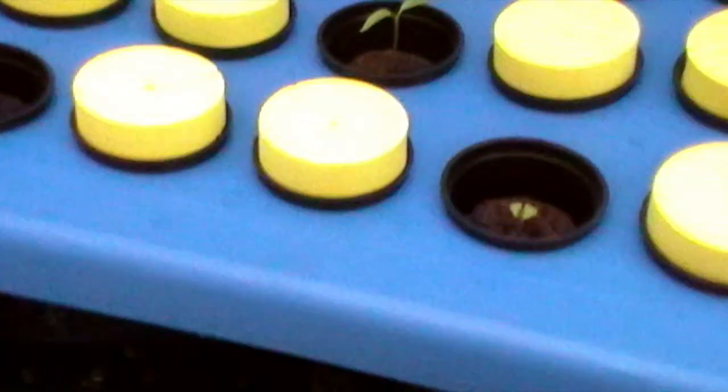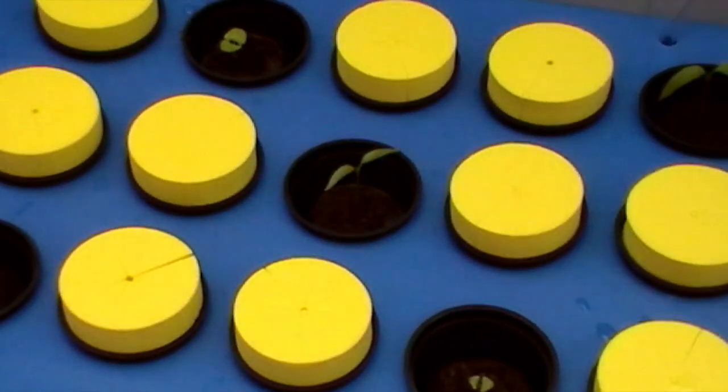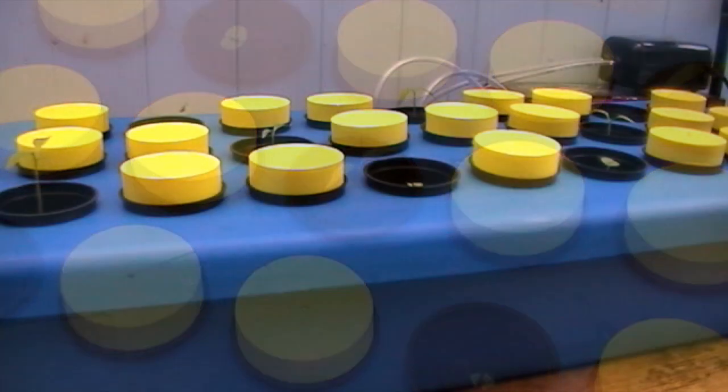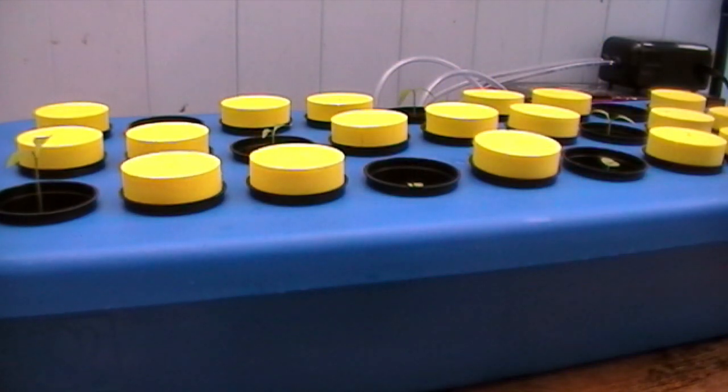You can use propagation plugs to germinate seeds and cloning collars to support cuttings. The young plants that this system develops can easily be transplanted into hydroponics or soil.